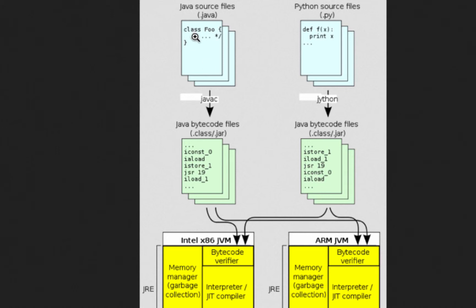Let's understand what happens when we write some Java code. A programmer writes a class called Foo and runs javac on it — he compiles it. The output of javac is bytecode, so when you run javac on Foo, the output Java generates is a .class file. This .class file consists of instructions which are bytecodes. This is what happens when I compile a Java program: a bytecode is produced.